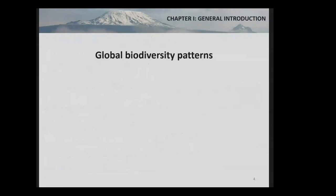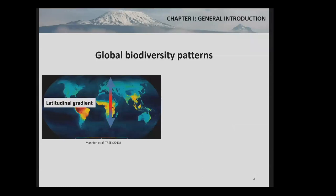Let's start with a general introduction. Biologists have been fascinated with the uneven distribution of biodiversity around the globe since the time of Darwin, Wallace, and Alexander von Humboldt. Probably the most pervasive pattern in biodiversity is a latitudinal gradient in richness, with elevated richness in the tropics and decreasing richness towards the poles. You can see the latitudinal gradient in mammal richness as an example.